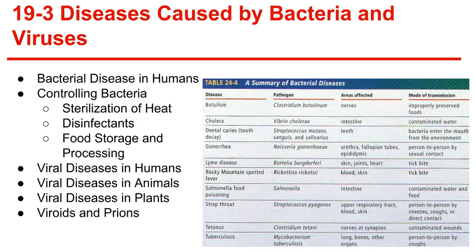Section 19-3, Diseases Caused by Bacteria and Viruses. Pathogens are disease-causing agents. Bacteria produce disease in one of two general ways: some bacteria damage the cells and tissue of the infected organism directly by breaking down the cells for food, while other bacteria release toxins that travel throughout the body, interfering with the normal activity of the host. An example of bacteria that use cells for food is the bacteria that causes tuberculosis, and an example of toxin-releasing bacteria is streptococcus, which causes strep throat.